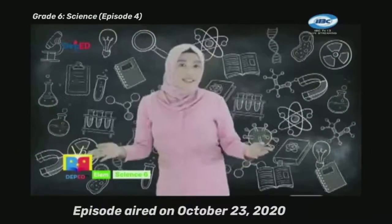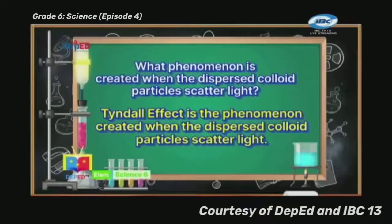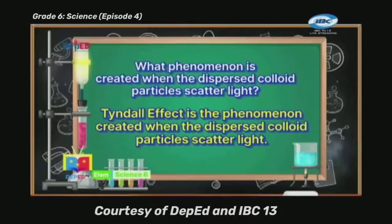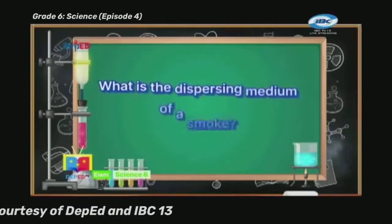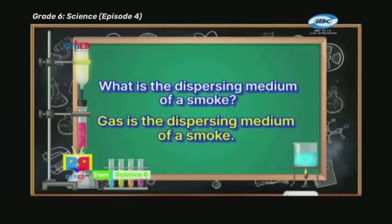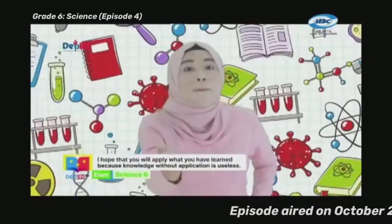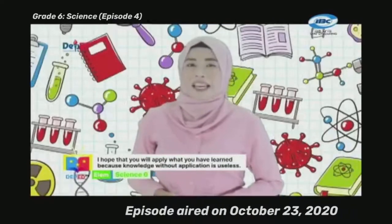Now, let's go to What I Can Do. Read carefully the information and answer the questions correctly. Write your answers on your paper. Number one — What phenomenon is created when the dispersed colloid particles scatter light? The Tyndall effect is the phenomenon created when the dispersed colloid particles scatter light. Number two — What is the dispersing medium of smoke? Gas is the dispersing medium of smoke. Amazing! It seems like you have learned a lot from our episode today. I hope you will apply what you have learned, because knowledge without application is useless.